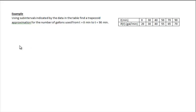Alright, the last example has us using the subintervals indicated by the data in the table. So I'm looking at the subintervals. That would be the difference between the x's. They're uneven, unequal. Okay, we're going to find a trapezoid approximation for the number of gallons used from time equals 0 to time equals 90. So 0 to 90, that would encompass all the data points. And I'm going to approximate the number of gallons.